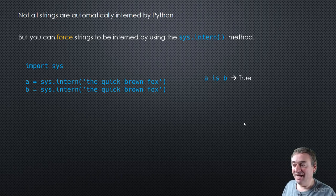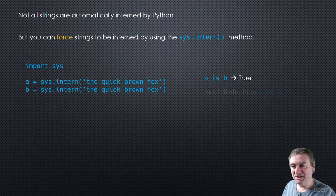In this case, 'A is B' will evaluate to true, and it's a much faster comparison than doing A == B.